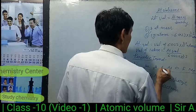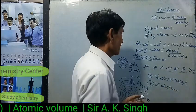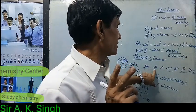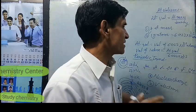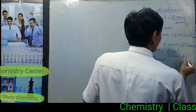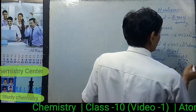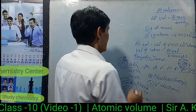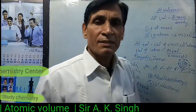Continuing across the second period: atomic numbers 5, 6, 7, 8, 9, 10 correspond to boron through neon, with electrons in the second shell being 3, 4, 5, 6, 7, and 8 respectively. So the number of electrons is increasing within the same shell as we move across the period.